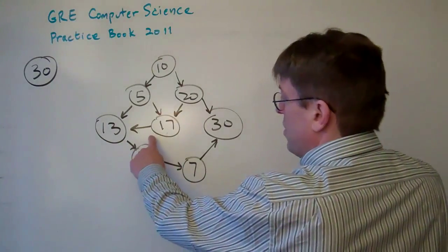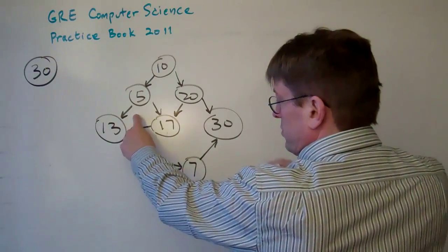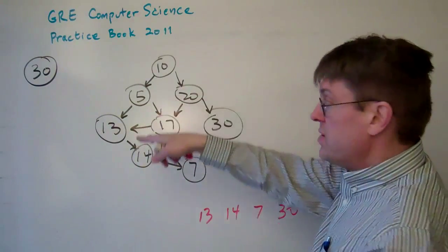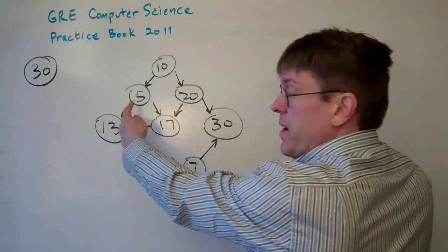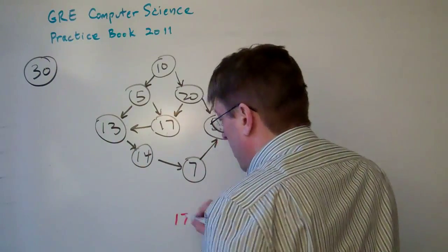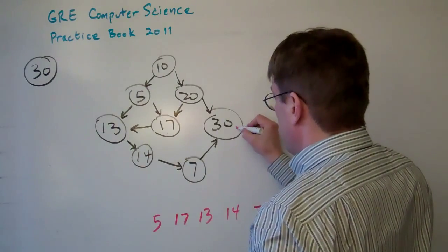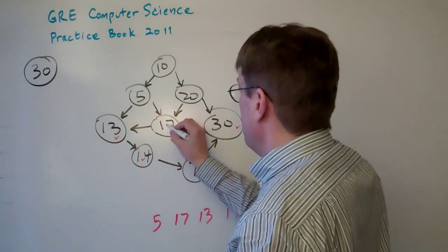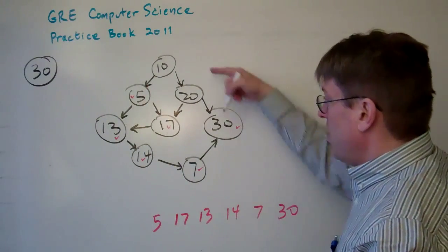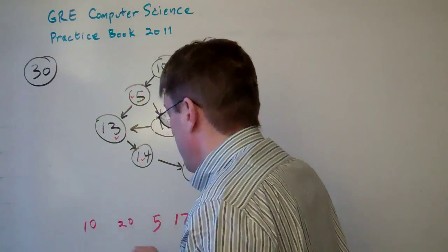The next path that goes to 13 is 17 and 5. The question would be which path do we take here? Well, 5 goes to 17 so we obviously can't go back to 5. So we have to go to 17, and then we go to 5 following it back. So we've got 17 and 5. The only ones we have left over are 10 and 20, and of course 10 comes before 20. So we've got 20 and 10.